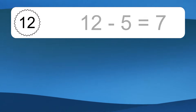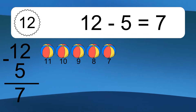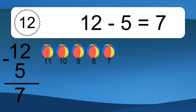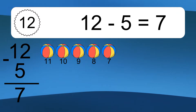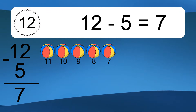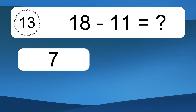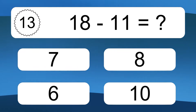12 minus 5 equals 7. Let's count it: 11, 10, 9, 8, 7. 18 minus 11 equals what?